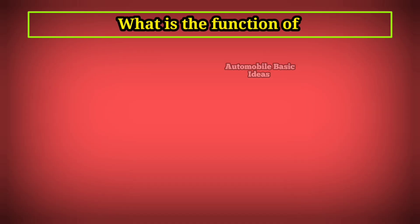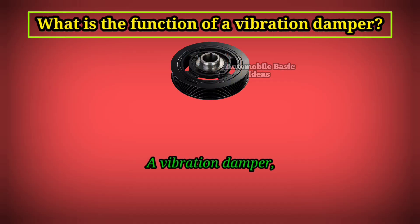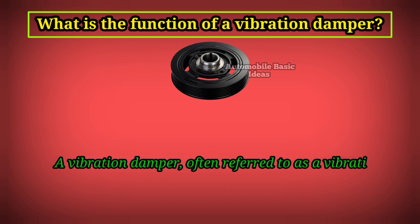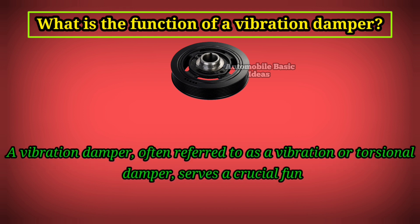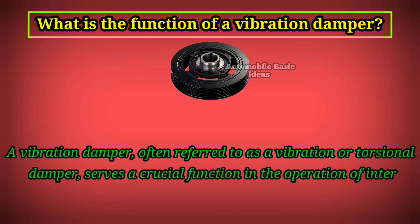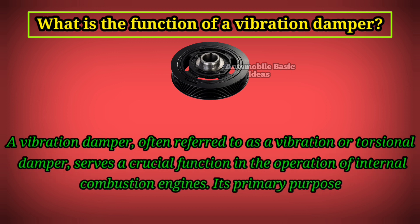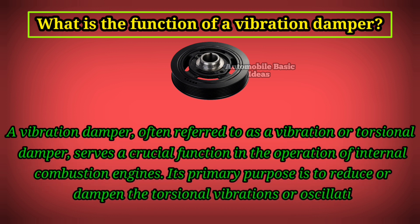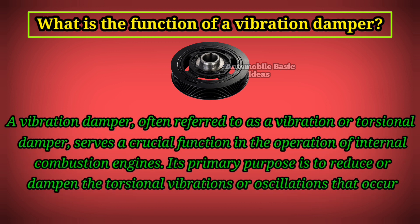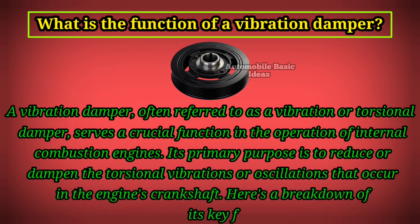What is the function of a vibration damper? A vibration damper, often referred to as a torsional damper, serves a crucial function in the operation of internal combustion engines. Its primary purpose is to reduce or dampen the torsional vibrations or oscillations that occur in the engine's crankshaft. Here's a breakdown of its key functions.